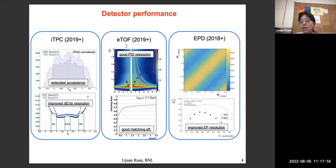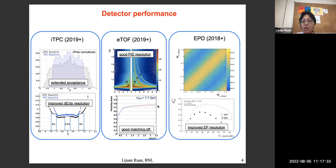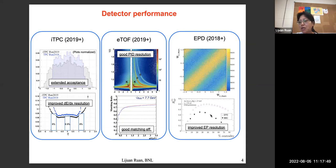For the endcap TOF detector, we borrowed it from the CBM-FAIR collaboration. The performance shown as 1/beta versus momentum gives very nice particle identification in the forward rapidity. The efficiency is around 70%, already including acceptance and dead area effects. For the event plane detector, the resolution improved significantly compared to the previously used BBC counter.